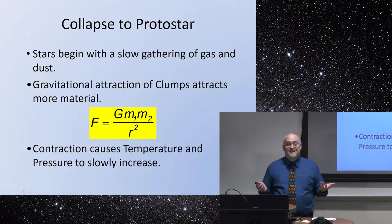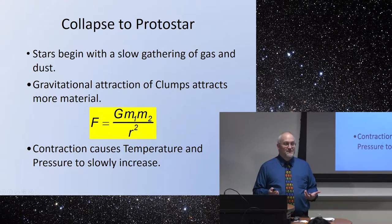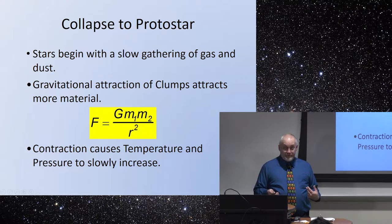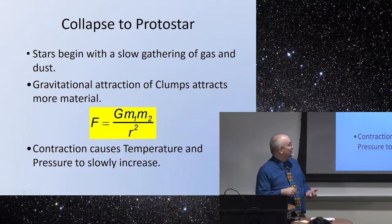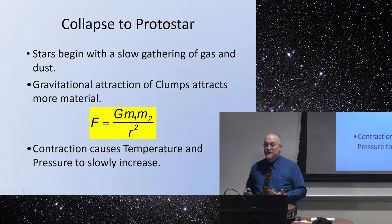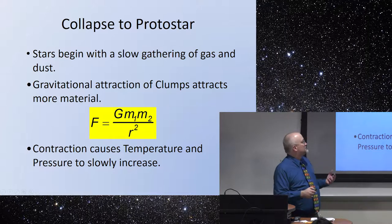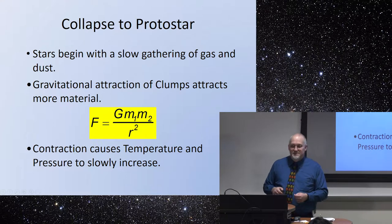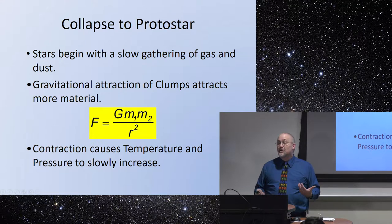Stars all begin with a slow gathering of gas and dust, because gravity works — we like that. Gravity always works; we have not yet found a case where it doesn't. We have Newton's rule of universal gravitation that says not only does it always work, but it extends out infinitely, and it depends on the mass of two objects being attracted over the square of their distance. The square of their distance can never get to zero, so gravity never goes to zero — the farther away they are, it gets smaller, but it never reaches zero.